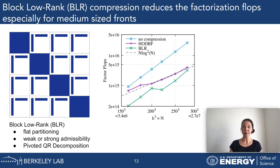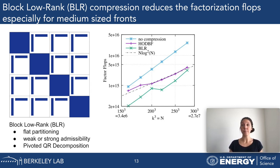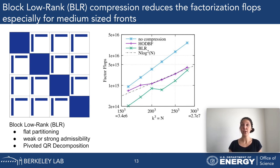On the left is a reminder of what the block-low-rank format means: flat partitioning with a strong admissibility condition. To the right, we see results for the factorization flops. Especially for smaller problems, the block-low-rank format does a better job—fewer factorization flops than HODBF.